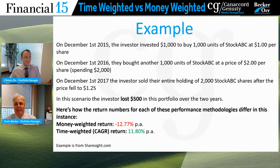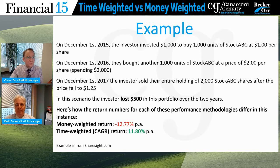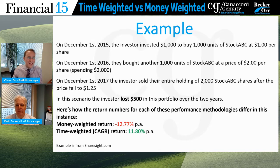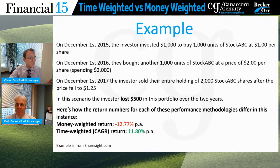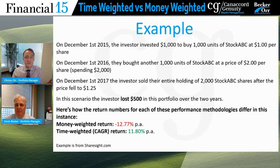The money weighted return is looking at the cash flow: you had $1,000 in year one, added $2,000 in year two, for a total of $3,000. By the end of that second year the portfolio is worth $2,500, so you lost $500 — working out to a loss of 12.77% per year. The time weighted ignores all the cash flows. It looks at the stock being worth $1 in year one and $1.25 by end of year two — a gain of 11.8% per year, just linking the time periods.